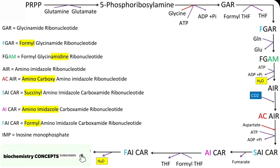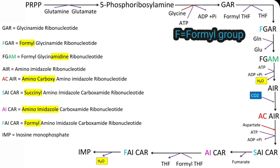In the next reaction, GAR is converted to FGAR, where FGAR means Formyl Glycinamide Ribonucleotide. So F equals the formyl group. In the conversion of GAR to FGAR, a formyl group is added. So it involves formyl tetrahydrofolate as the coenzyme. As the formyl group is transferred, the enzyme is called Formyl Transferase or Transformylase.